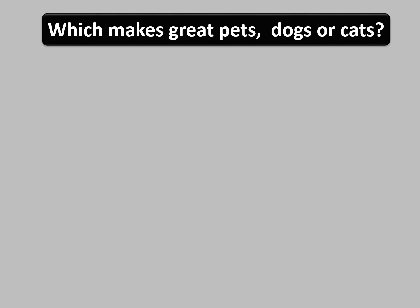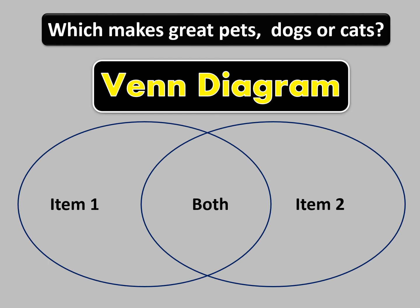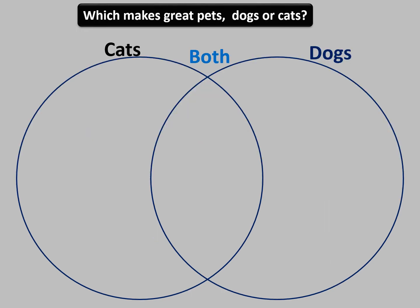For example, let's try brainstorming with the topic: which makes a greater pet, dogs or cats? The best way to brainstorm this topic is using what we call a Venn diagram — a diagram that shows all possible and logical relations between different sets. Here we have two sets that overlap: item one and item two with the overlap in the middle. On the left we write things that make cats good pets, on the right things that make dogs good pets, and in the middle things that both dogs and cats have.